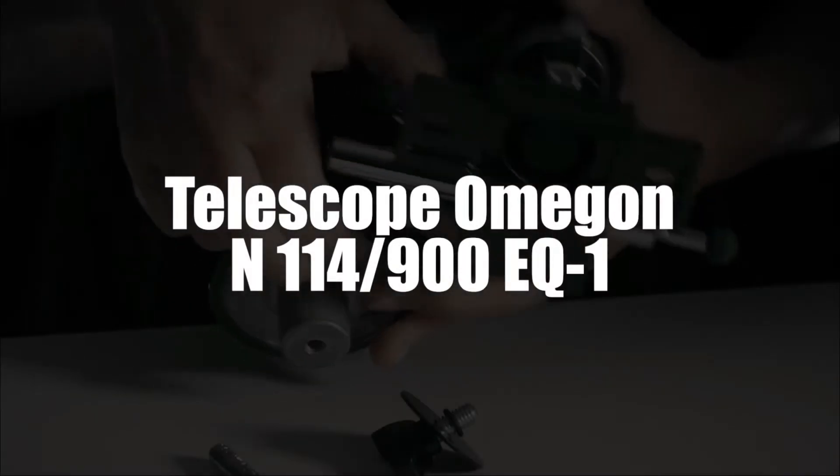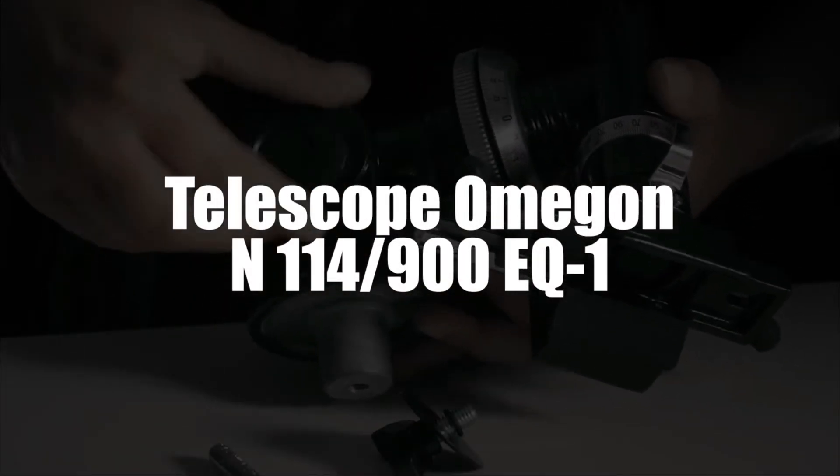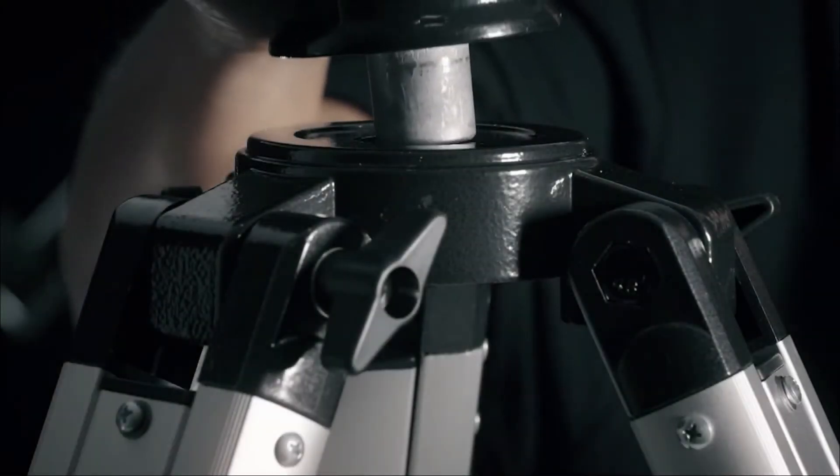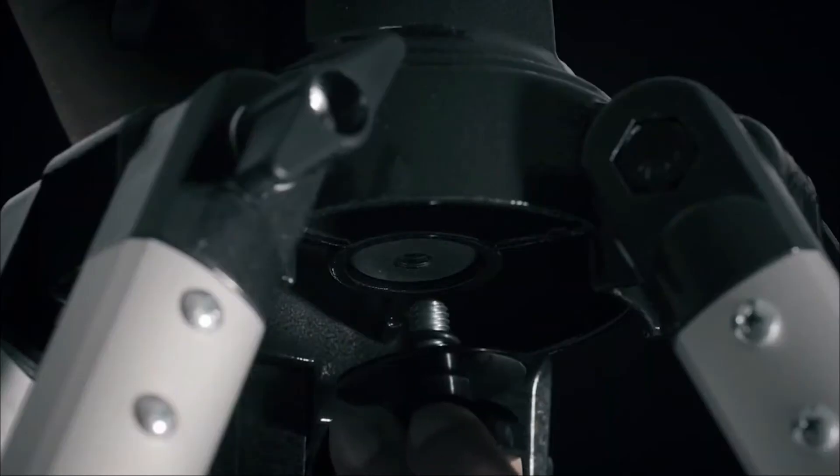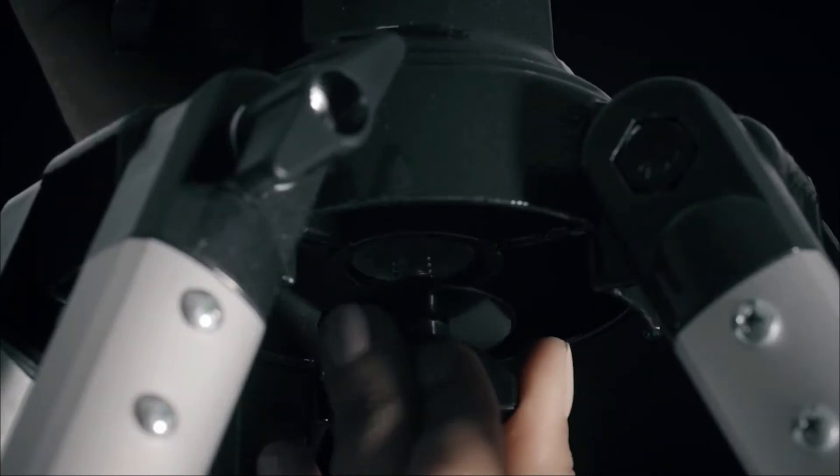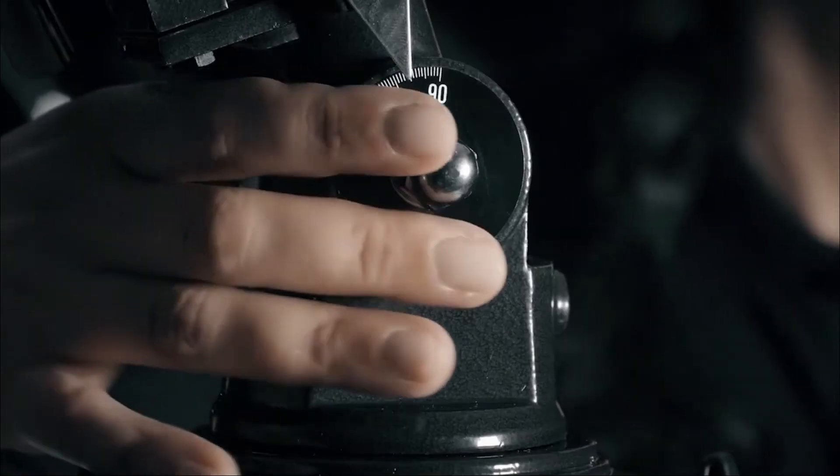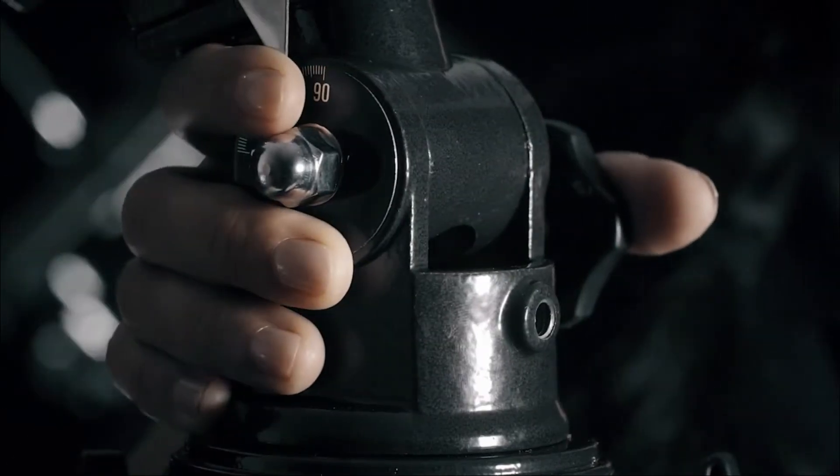In third place now, we have selected the Omegon N 114-900 EQ1 telescope. Incorporating an EQ1 mount and 114-900 optics, this instrument offers an aperture ratio of 1 by 7.9. That makes it perfect for the novice astronomer.